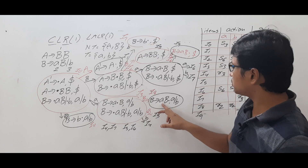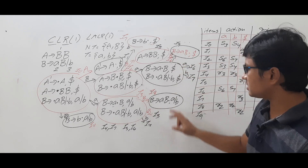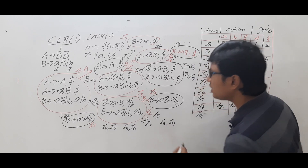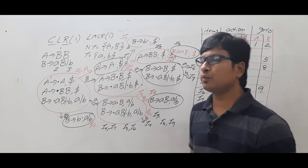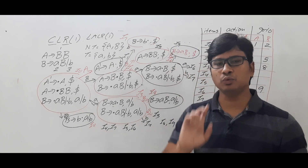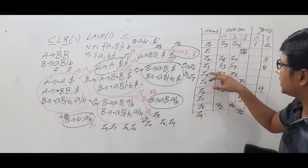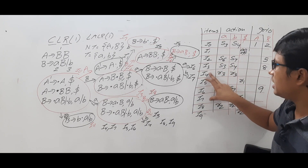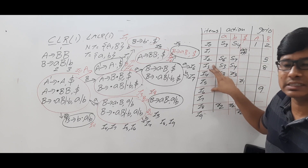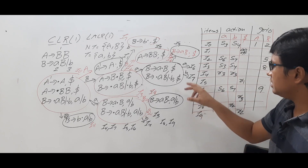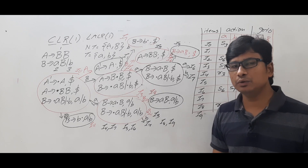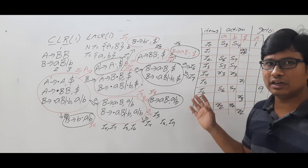Likewise, I8 and I9 have the same productions but different lookaheads. In LALR(1) parsing table construction, I will combine these pairs into single states: I3 and I6 become one entry, I4 and I7 become one entry, and I8 and I9 become one entry, instead of keeping them as two different items each.